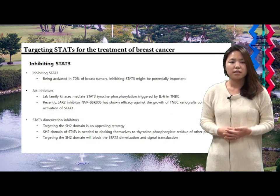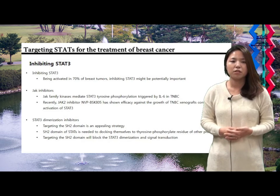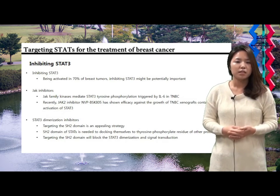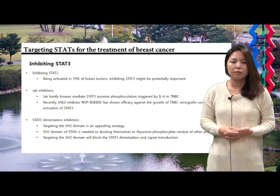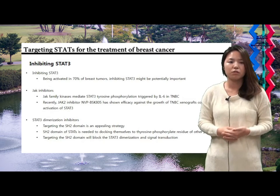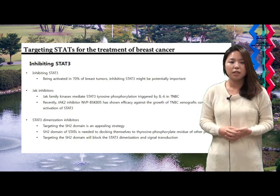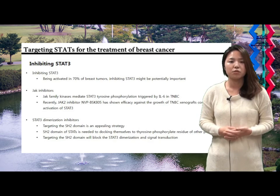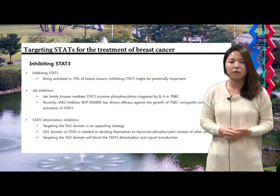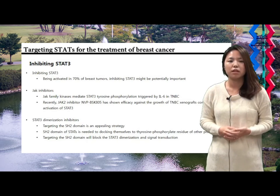Therefore, targeting STATs for the treatment of breast cancer is important. Because STAT 3 is activated in 70% of breast tumors, inhibiting STAT 3 might be potentially important. STAT 3 can be inhibited by its upstream inhibitors such as JAK inhibitors. Recently, a JAK 2 inhibitor has shown efficacy against the growth of TNBC xenografts containing activation of STAT 3. We can also inhibit STAT 3 by STAT 3 dimerization inhibitors. Because STAT 3 has to be dimerized to transcriptionally regulate target genes, targeting the SH2 domain to block STAT 3 dimerization and signal transduction could be a possible way to block STAT 3 function.